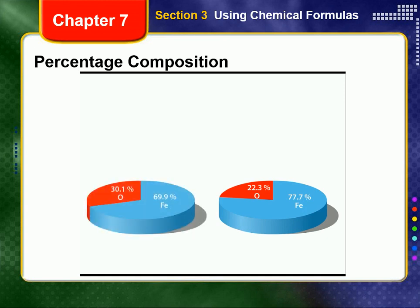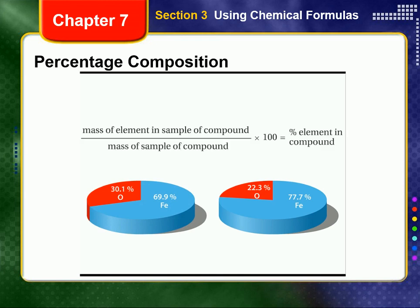Because of their differing percent composition, their properties differ. To find the percent composition, divide the mass of a given element in a sample of a compound by the total mass of the sample and multiply by 100. The percentage composition can also be used to find the empirical formula of an unknown compound.